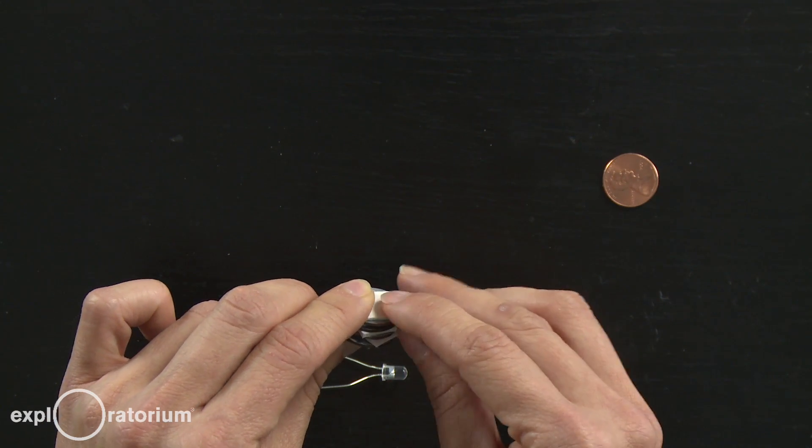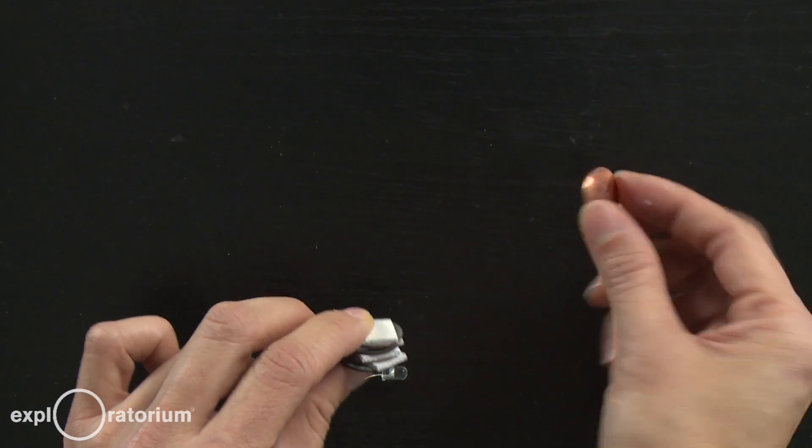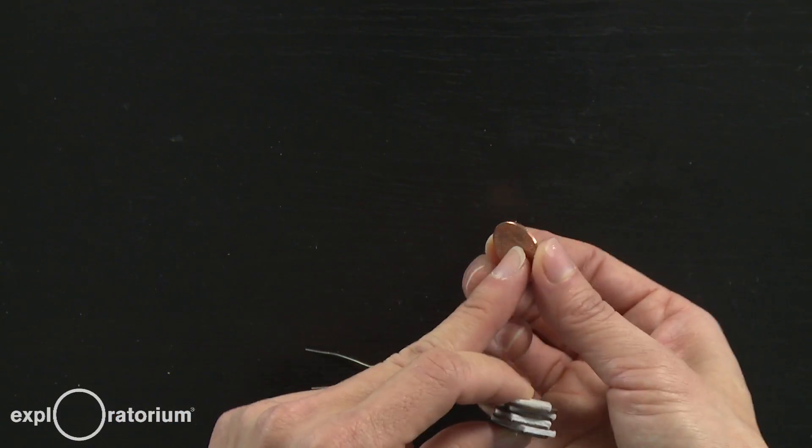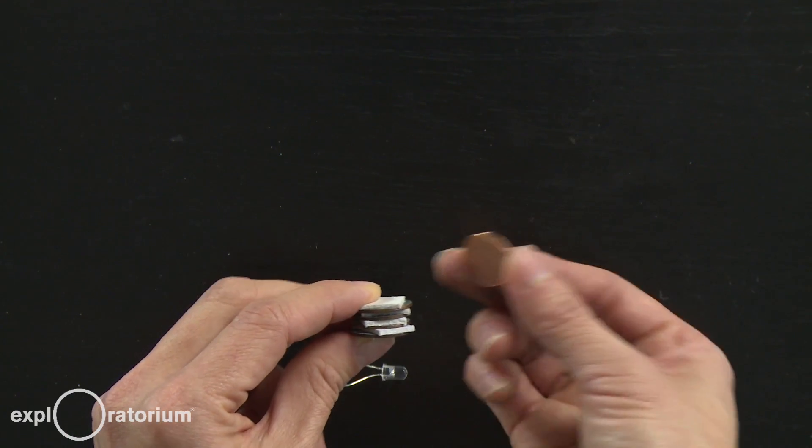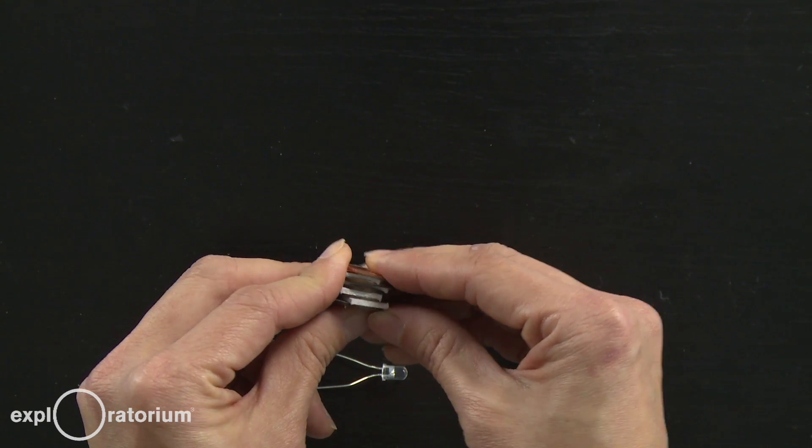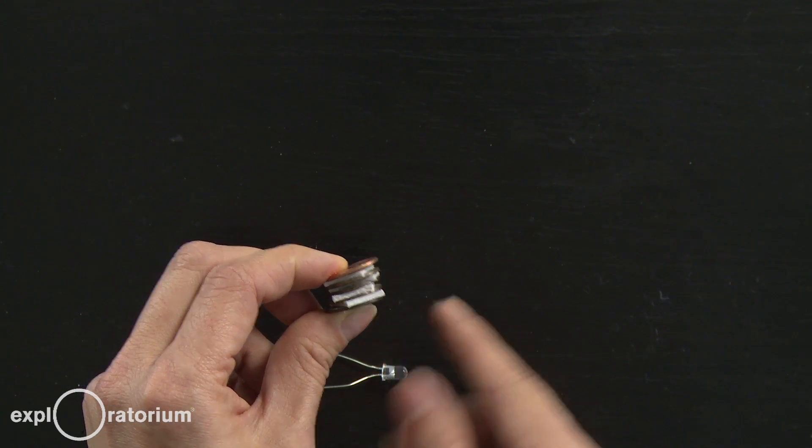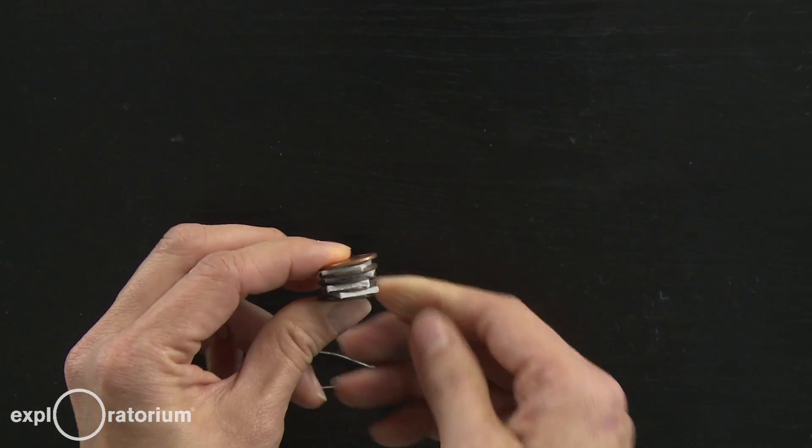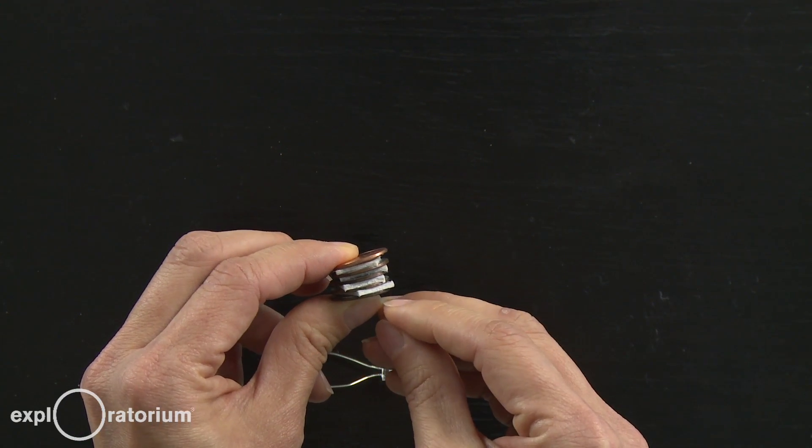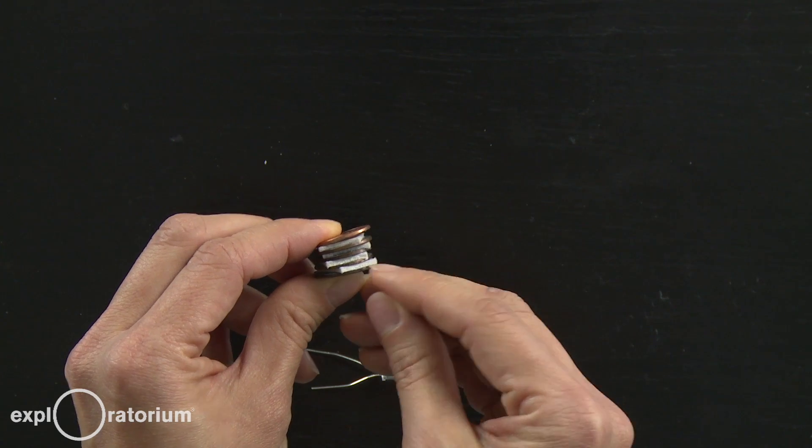So I have zinc, salt, and it's ready for copper side. And that's where that fifth penny comes in because both sides are copper. So you can just put that whichever way you want, either side on top. And now I have a four cell battery that is made of alternating layers of zinc, salt, and copper.